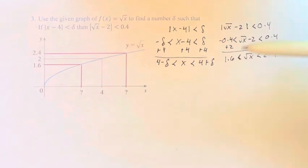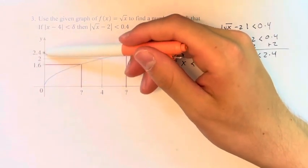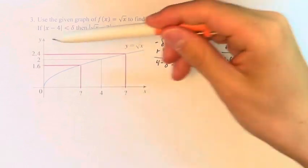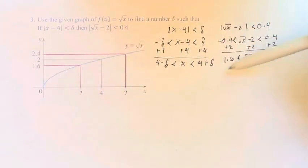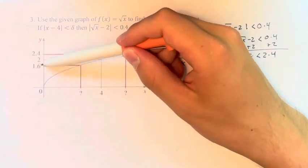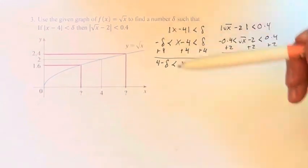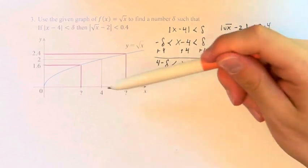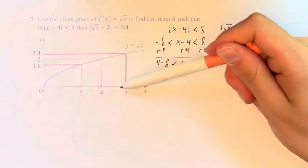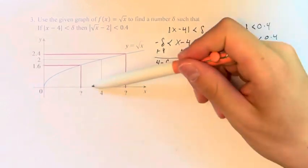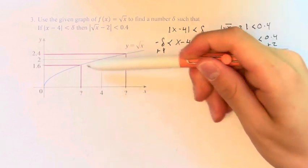So what we're saying here is that this function corresponds to a range of values of this function between 1.6 and 2.4. And there exists a delta such that if we don't go more than delta away from 4, we stay within this range.